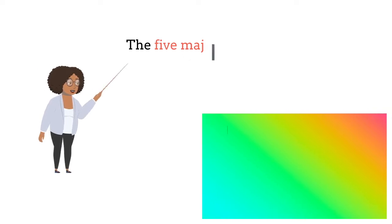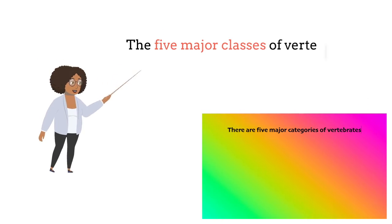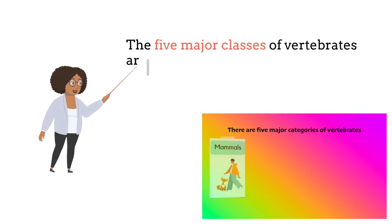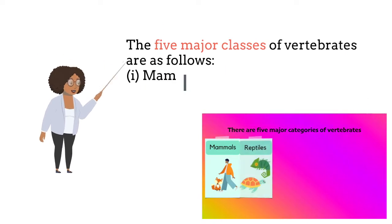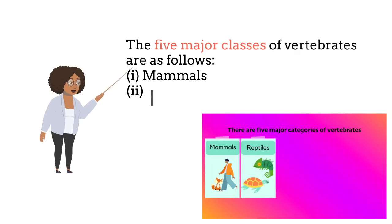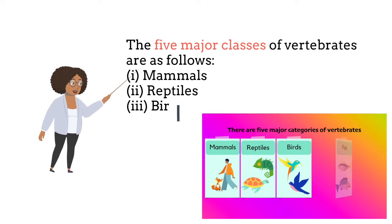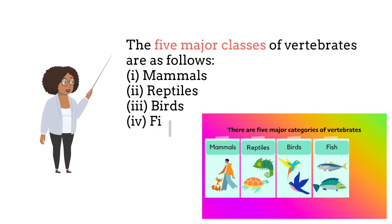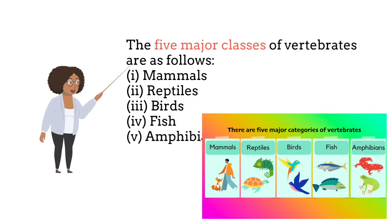There are five major classes of vertebrates: mammals, reptiles, birds, fish, and amphibians.